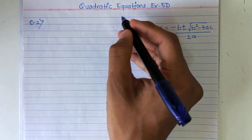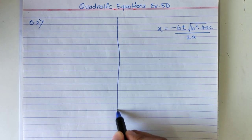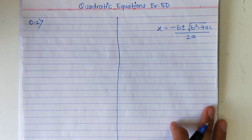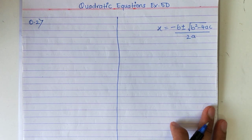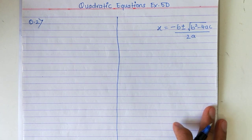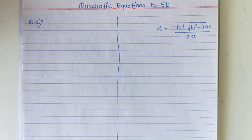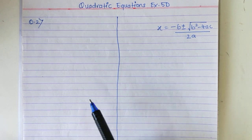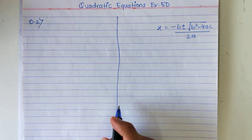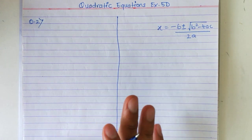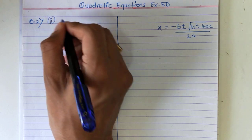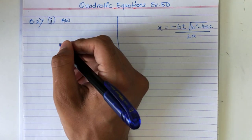I will start with question number 2. Solve each of the following equations for x and give your answer correct up to one decimal place. Means after the decimal point you should have one digit. There are two questions. Method remains the same — I will do the second one. The first one you do it on your own for homework.